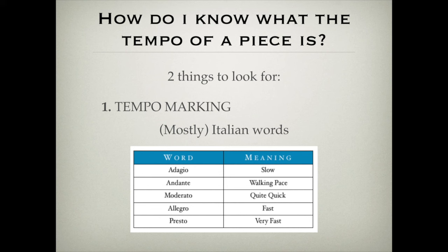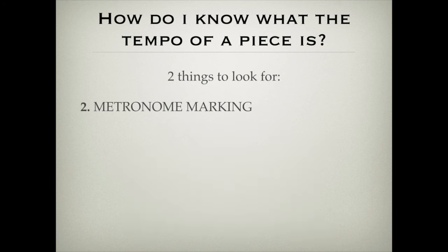Adagio, meaning slow. Andante, meaning walking pace. Moderato, quite quickly. Allegro, fast. And presto, very fast. There are other words you'll come across, but those five words are very common. So you might see a tempo marking at the start of the piece.